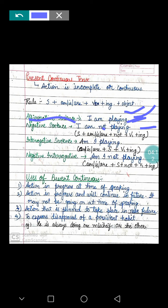Interrogative means questioning. When we are asked to make an interrogative sentence, we use: Am I playing? — with a question mark. For example: Is he writing? Is the president going to meet Ram? The form is: is/am/are + subject + verb + -ing. Just concentrate on the examples given to you.